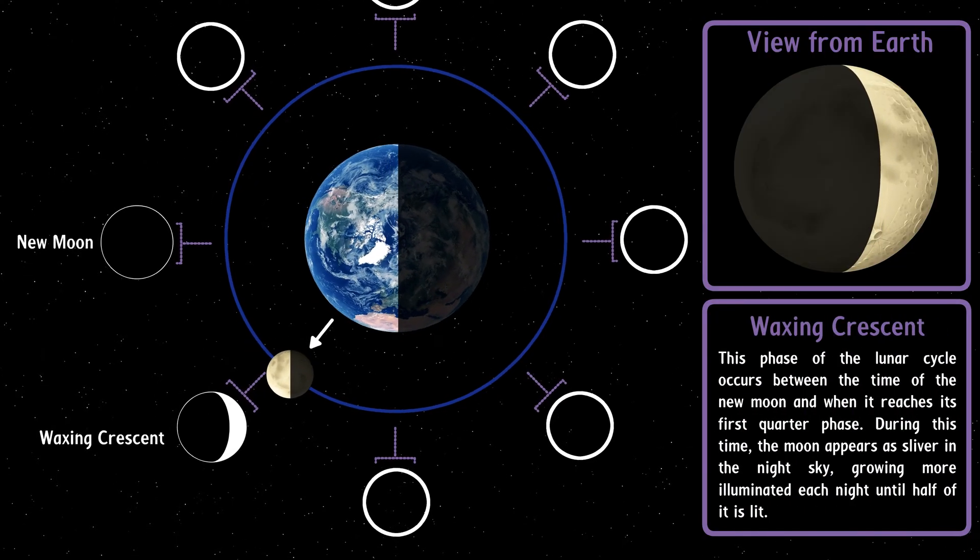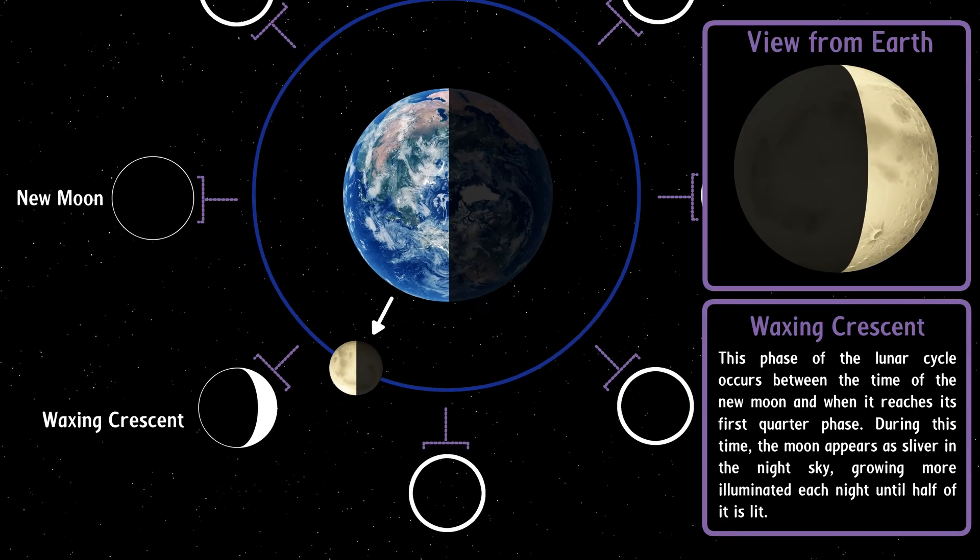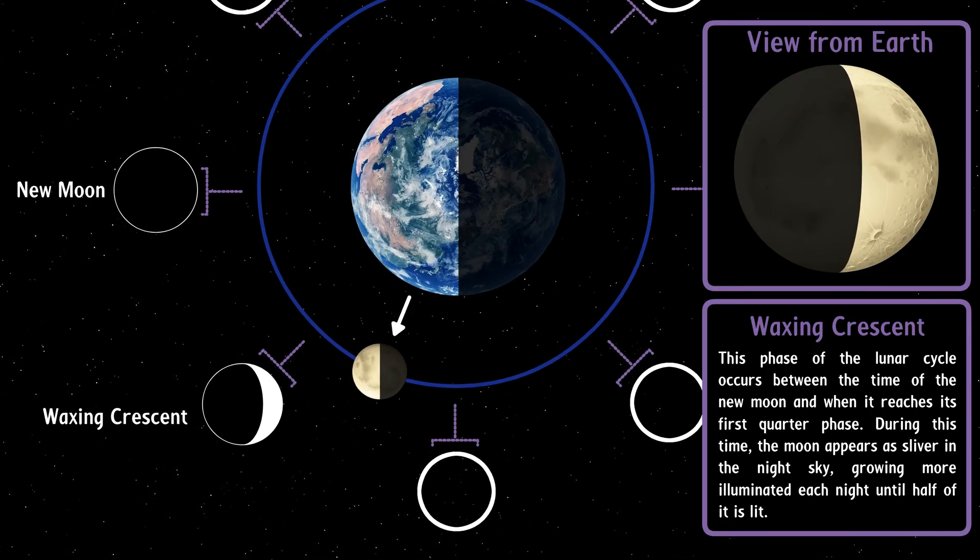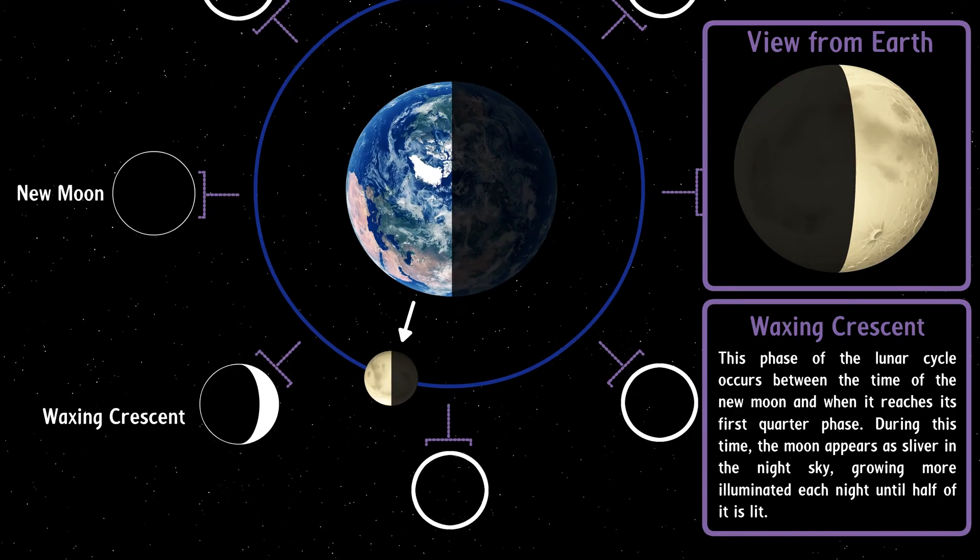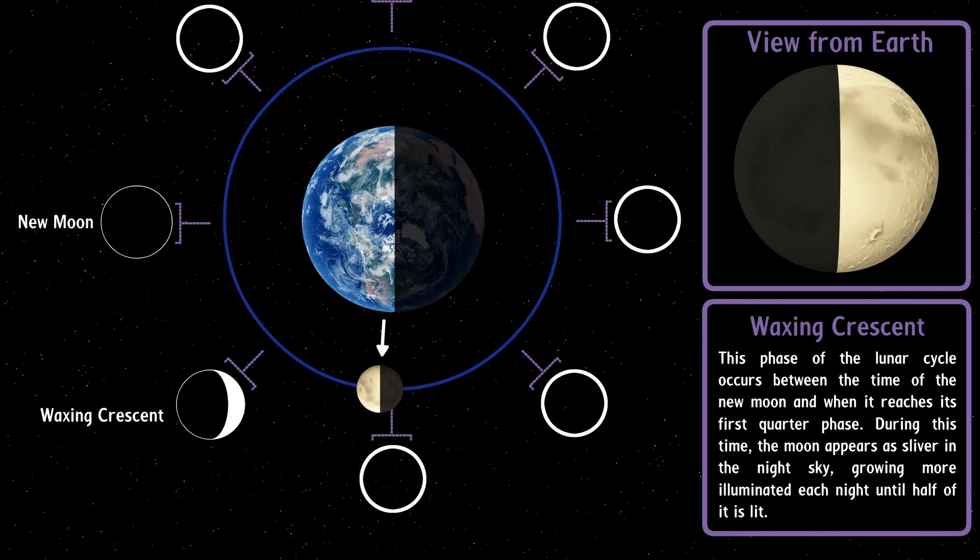Waxing crescent. This phase of the lunar cycle occurs between the time of the new moon and when it reaches its first quarter phase. During this time, the moon appears as a sliver in the night sky, growing more illuminated each night until half of it is lit.